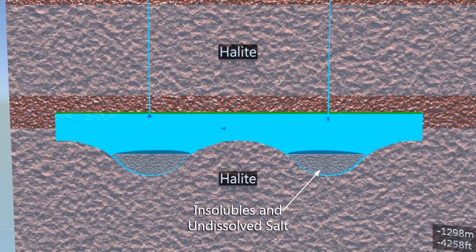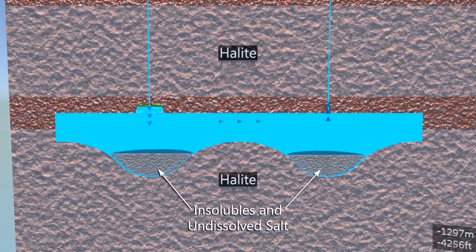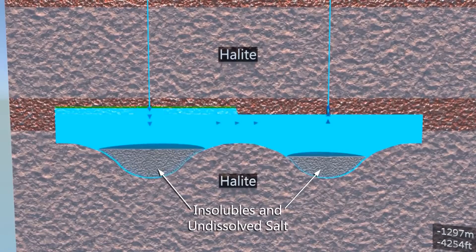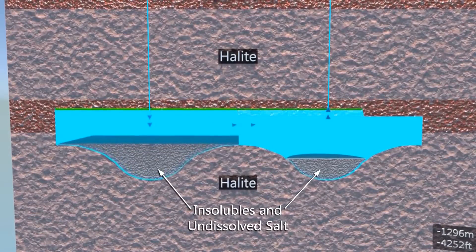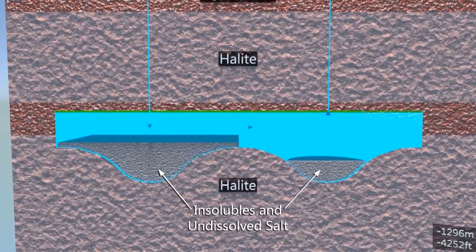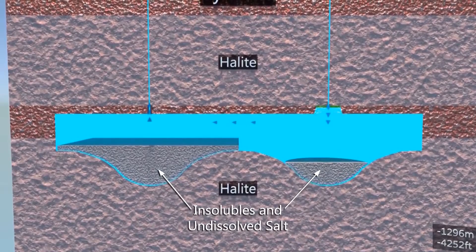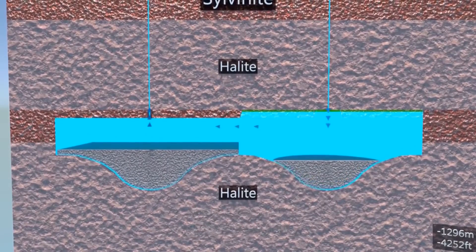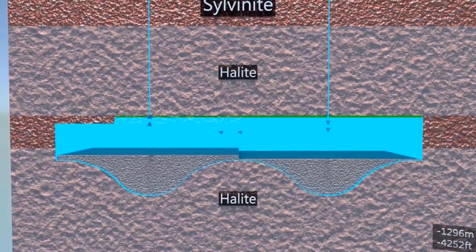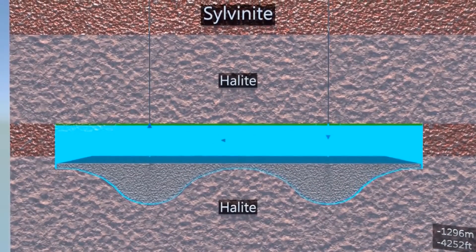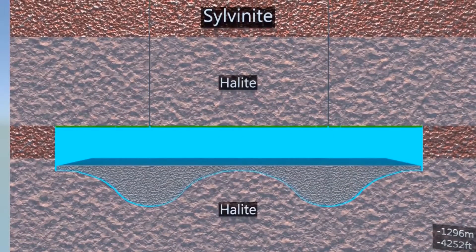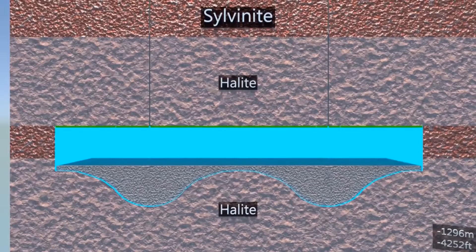As mining proceeds, the insoluble materials, such as clays and some undissolved sodium chloride, fall to the bottom of the sump. Unlike a conventional underground potash mine, none of the insoluble materials and a reduced amount of salt is brought to surface per ton of potash mined. The result is no surface storage of the fine insoluble material and a smaller storage requirement on surface for salt. Mining is continued until the Esterhazy member is mined out.